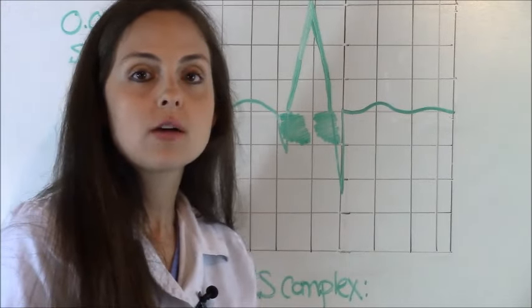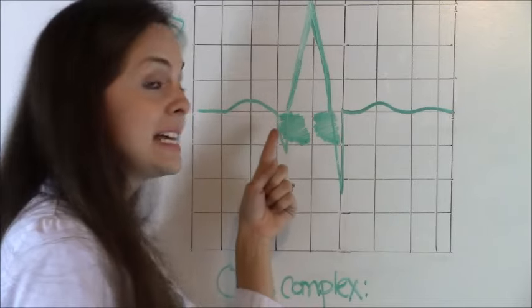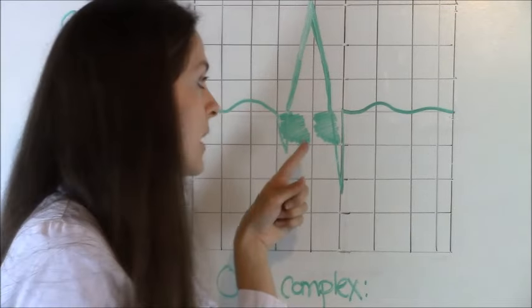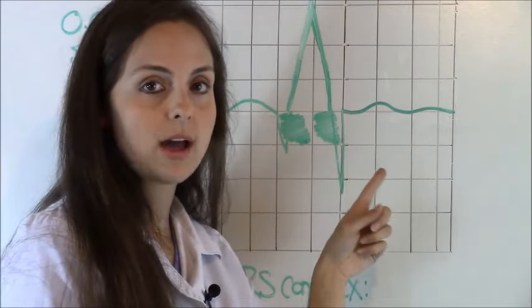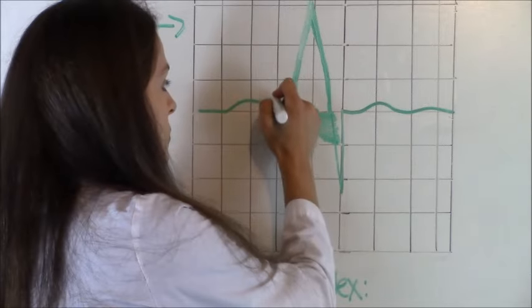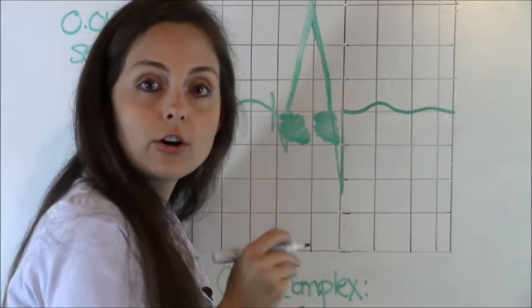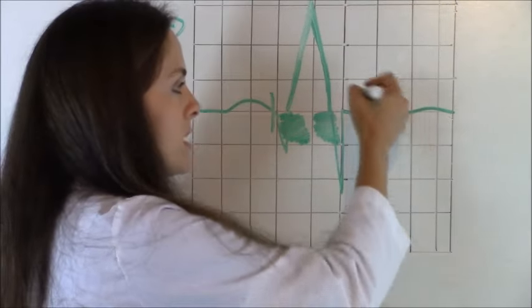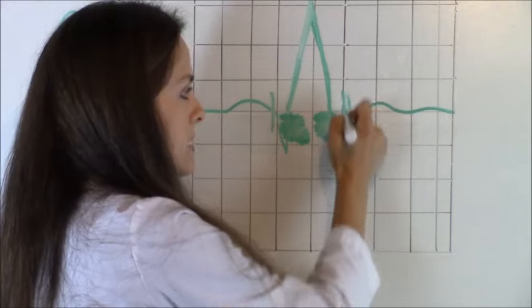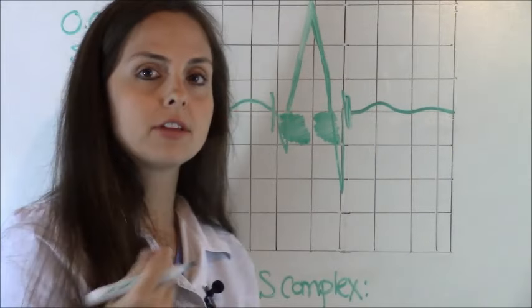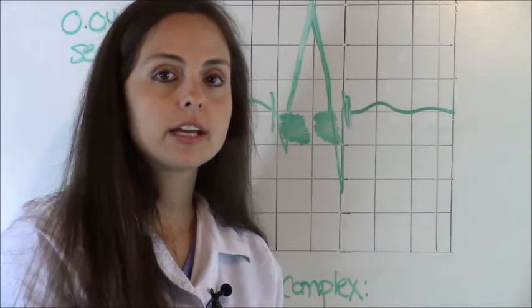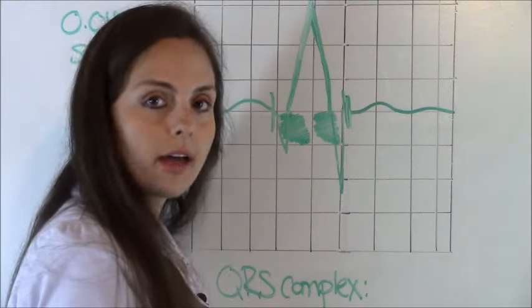So to do this, we start measuring at the beginning, at the end of the PR interval to the end of the S wave. So we're going to start measuring right here because that's the end of the PR interval. And then we're going to measure all the way to the end of the S wave, which is right here of the QRS complex. And then you're going to count how many boxes appear in between those.